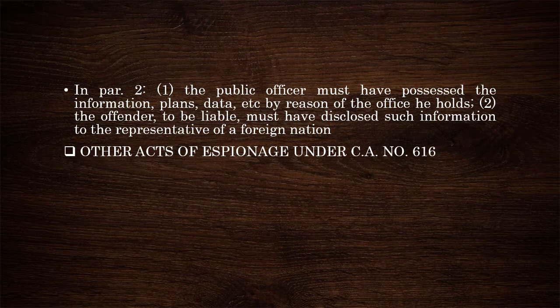Now, there are other acts of espionage punished under a special law. The special law is Commonwealth Act number 616. So while in the Revised Penal Code there are only two ways of committing espionage, in Commonwealth Act number 616 there are actually 14 distinct acts of committing espionage.